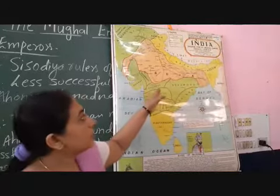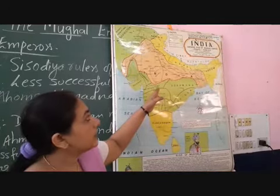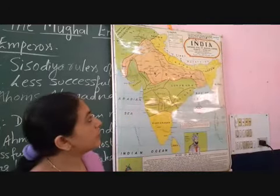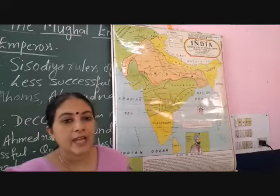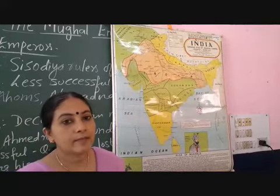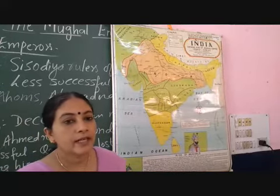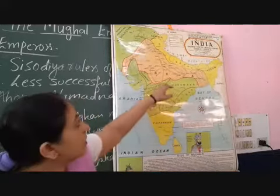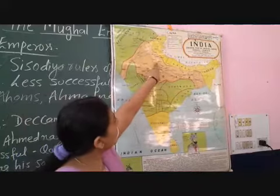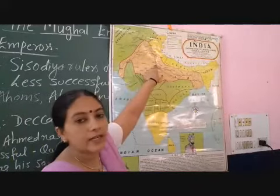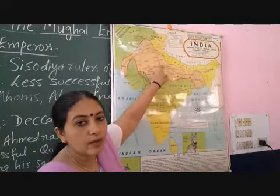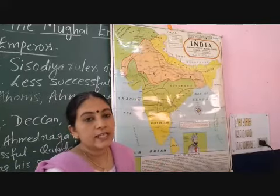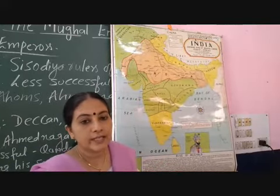This map shows the rise of the Mughal Empire from 1526 to 1556 A.D. In 1526, Babur became the ruler, then in 1530 Humayun became the ruler. When Babur was the ruler, only Delhi and the nearby areas were under Mughal control. During Humayun's first 10 years of rule, he also could not extend the empire.